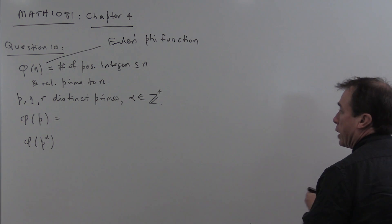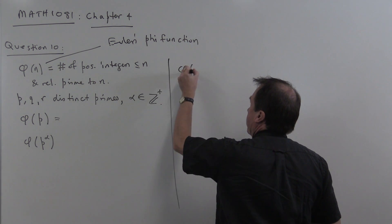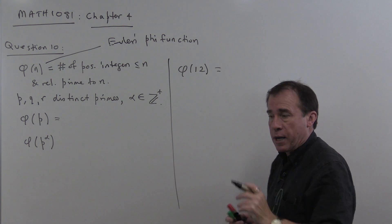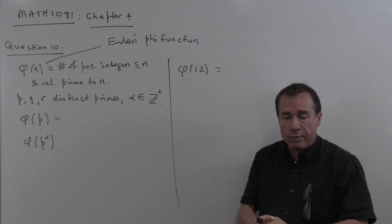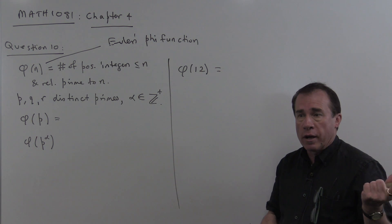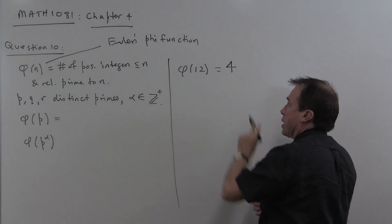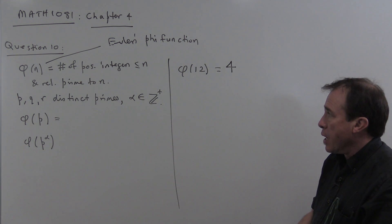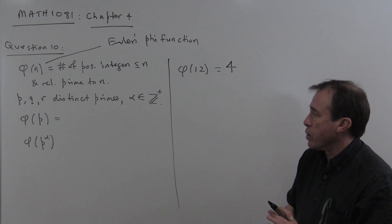For example, if we looked at φ(12), so if you list the numbers up to 12 and pick out the ones that are relatively prime to 12, that is, that have no common factor with 12 except 1, then the numbers are 1, 5, 7, and 11, and so there's 4 of those. So φ(12) is 4. In this problem, we're asked to compute various different values of phi for various situations. I'm going to do two that actually aren't in the question and then I'll do the ones that are in the question.